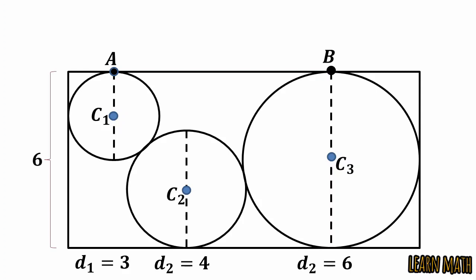So the radius of the first circle is 1.5 because the diameter is 3. The radius of the second circle is 2 because the diameter is 4, and the radius of the third circle is 3.